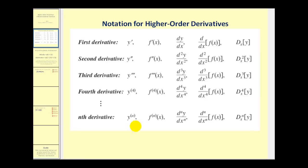Let's first review the different notation that we can use when we're talking about the first, second, third, fourth, and nth derivatives. These are referred to as higher order derivatives.